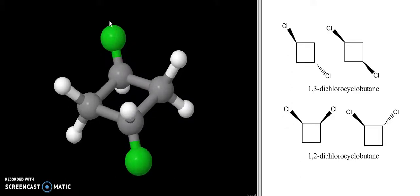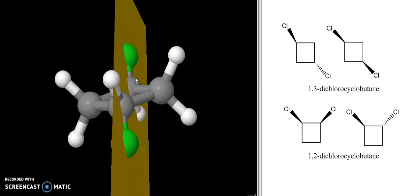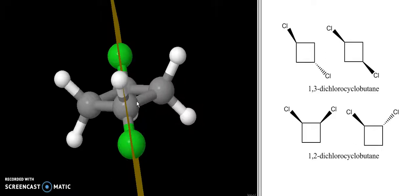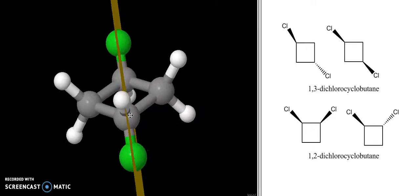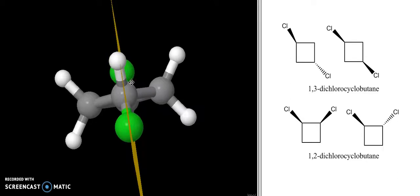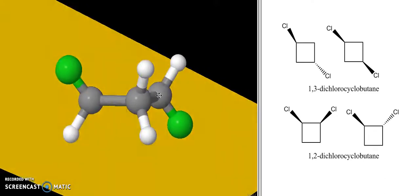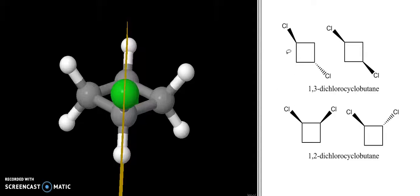I can actually draw in that plane of symmetry, just like this. You can see it goes right through the two carbons that contain the chlorine. It also splits the hydrogen and the chlorine in half on both of those atoms. The left side of the molecule and the right side are exact reflections of one another. So we have a mirror plane going right through the molecule, and since it has a mirror plane, it is not a chiral molecule and does not exist as a pair of enantiomers.